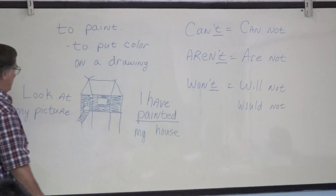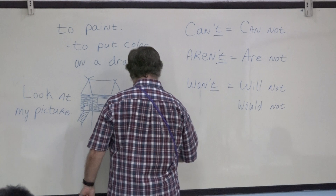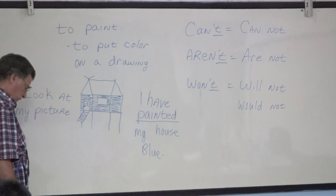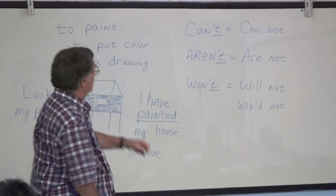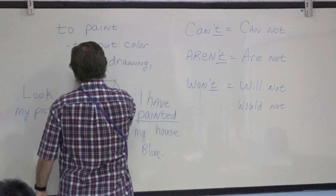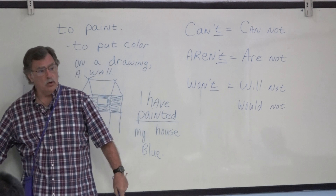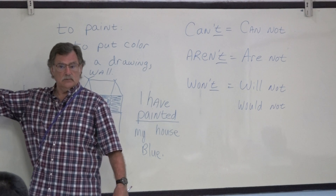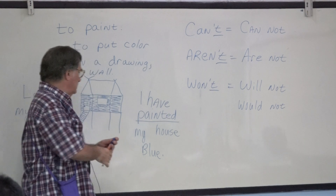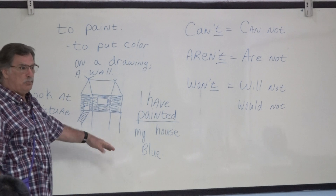Look at my picture. I have painted my house blue. To paint means to put color on a drawing, a wall. They painted the wall blue and white. Okay, understand? I'm a very famous painter.